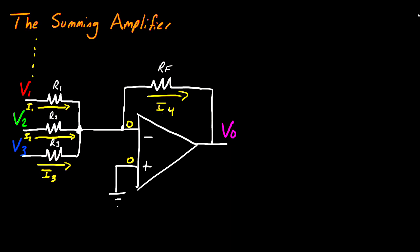So now that we labeled our circuit, the next step is to write KCL. So now for our KCL, we have I1, I2, and I3 going into the node, and I4 leaving the node. And we don't have any current going into our op amp because we're treating this as an ideal op amp.